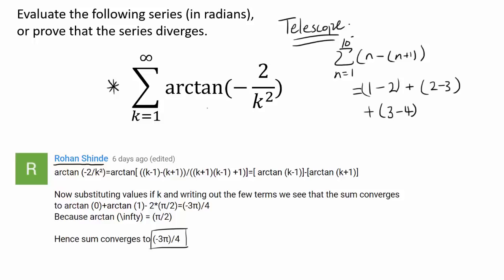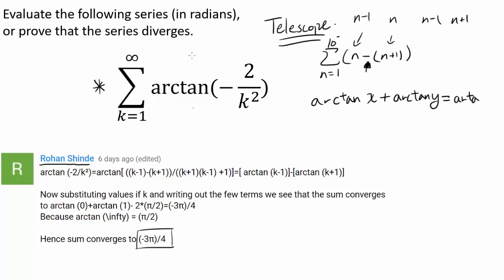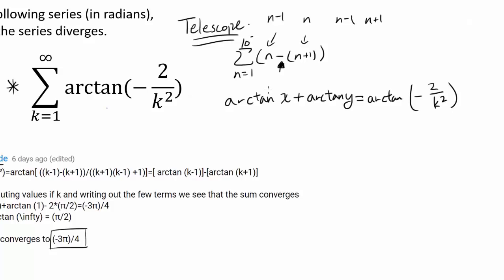That's always the hardest part — trying to make this summation telescope. We want to develop a formula for arctangent, specifically to find if it's possible to express arctangent of x plus arctangent of y such that we get arctangent of negative 2 over k squared. To make the summation telescope, we want x and y to be in the form of k, k plus 1, k minus 1, or some reasonably close values of k.